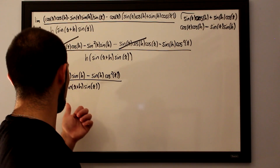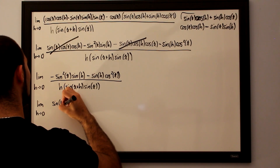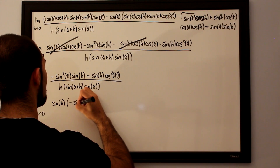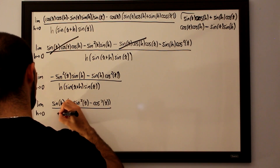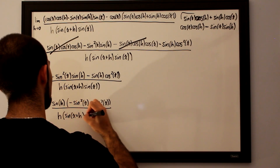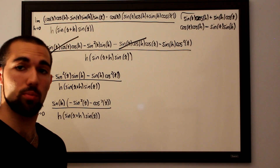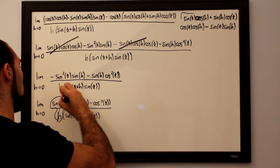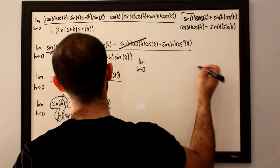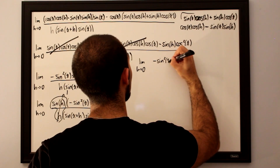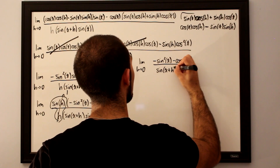What I'd like to do here is factor out a sine of h from the numerator. So we take the limit as h approaches 0 for sine of h times the quantity negative sine squared of x minus cosine squared of x, all divided by h times sine of x plus h times sine of x. We can rearrange this as sine of h over h multiplied by the rest. The limit as h approaches 0 of sine of h over h equals 1, so this simplifies to the limit as h approaches 0 for negative sine squared of x minus cosine squared of x, over sine of x plus h times sine of x.